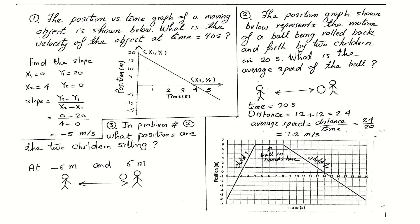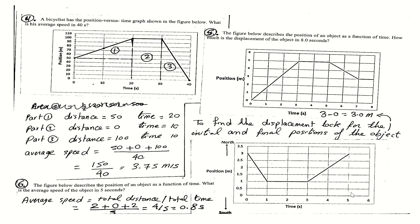The first child throws the ball, the second child holds it for a certain time, then from positive six throws it back to the first child at negative six. Moving on — problem four says a bicyclist has the position versus time graph shown below. What is his average speed in 40 seconds? The graph has three segments.